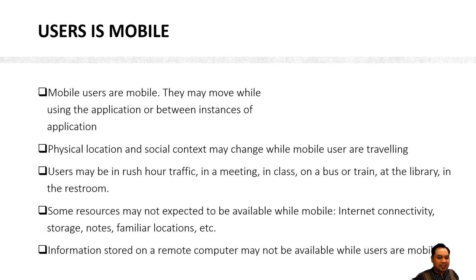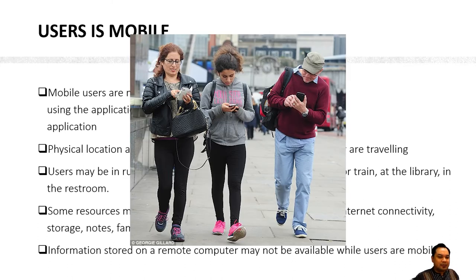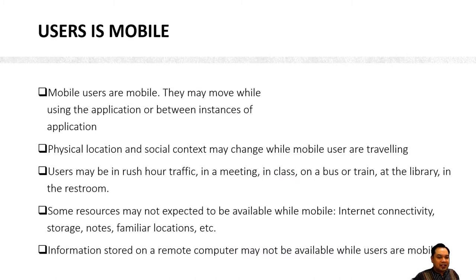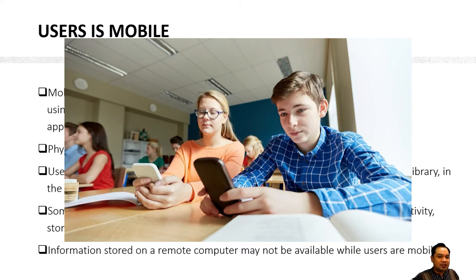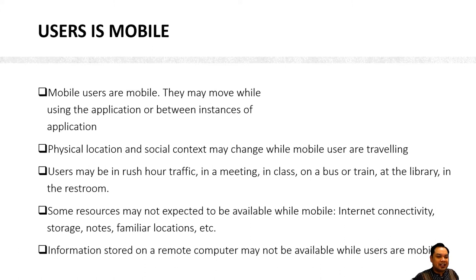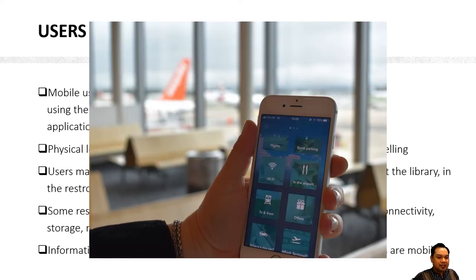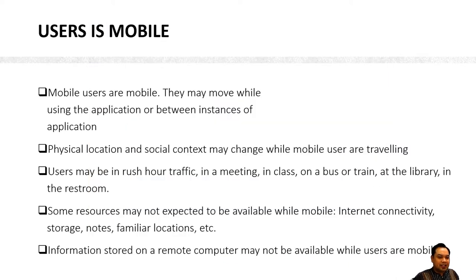The first mobile user characteristic is that the user is mobile. This means they may move while using the application or between instances of the application. A mobile user can use their application anywhere they like — sitting at a bus station, in class, inside a phone, or at the airport. The point is that the user is always mobile.